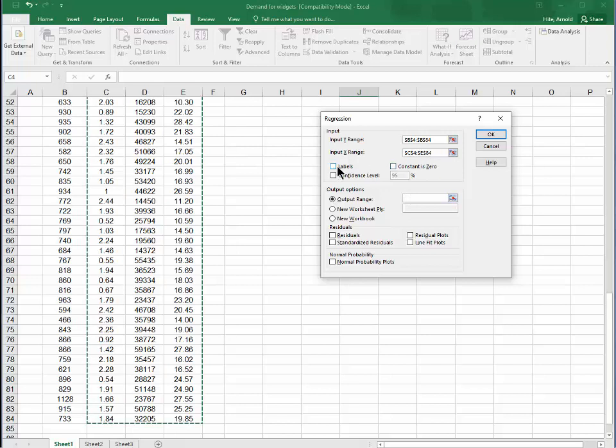You see this little box here that says Labels? I need to click that box because, if you remember, when I grabbed the data, I grabbed that one identifying cell at the top, which Excel calls the Labels. If I don't check this box, Excel will think those words are part of the data and it'll get all mixed up. So I got that box checked.